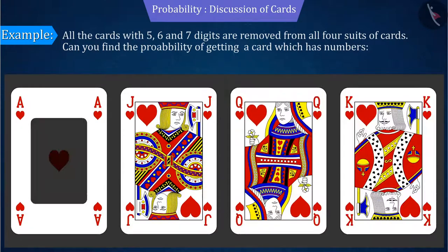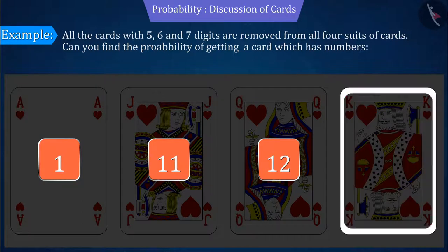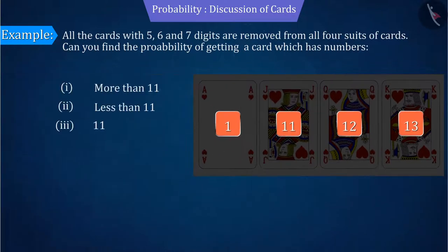Where Ace is given the value of 1, Jack is 11, Queen is 12, King is 13, and other cards are also named in a similar manner. Let us discuss this.